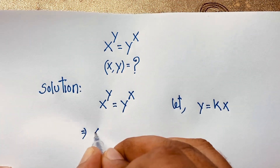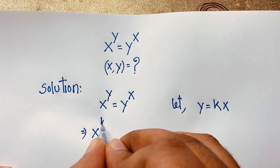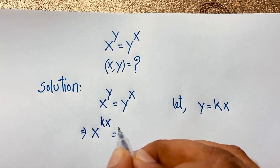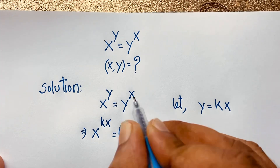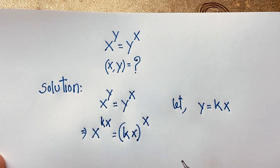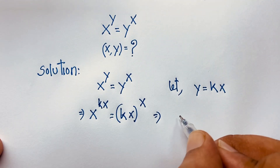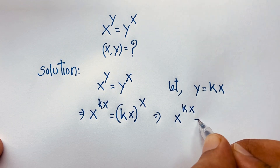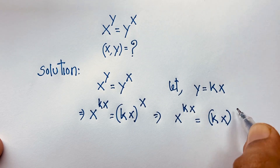So substituting, it will be x to the power kx is equal to kx whole to the power x. So we have x to the power kx is equal to kx to the power x.